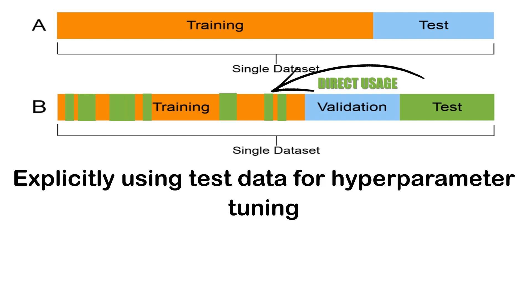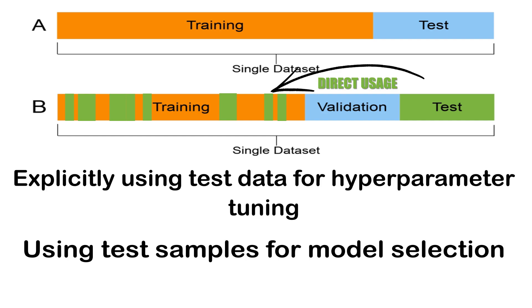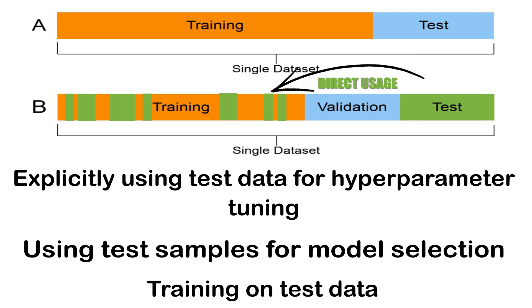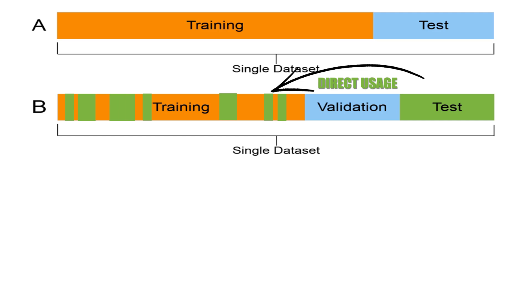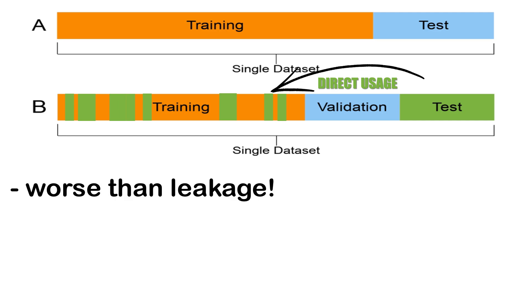Train-test contamination is more direct misuse, like explicitly using test data for hyperparameter tuning, using test samples for model selection, or training on test data. Train-test contamination is worse than data leakage because it compromises your entire evaluation setup.